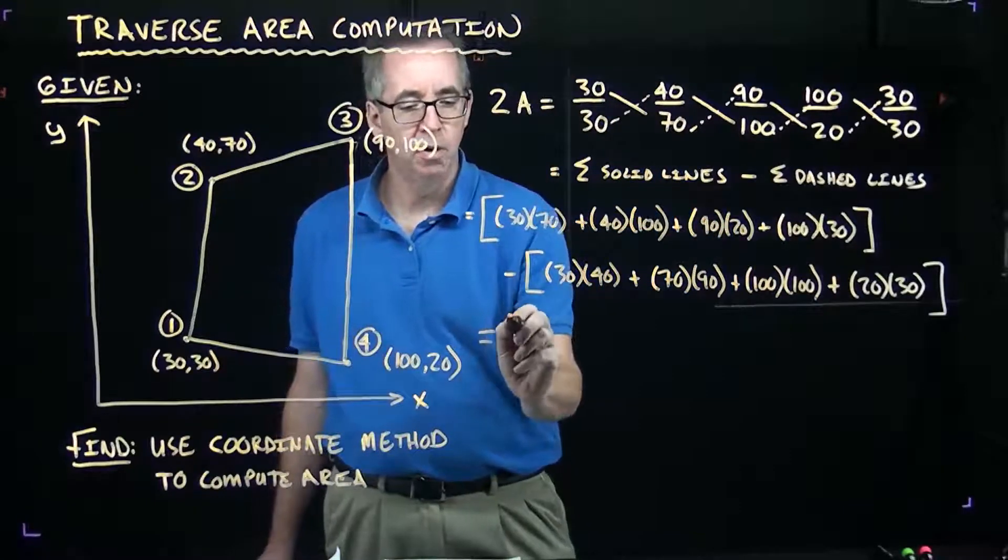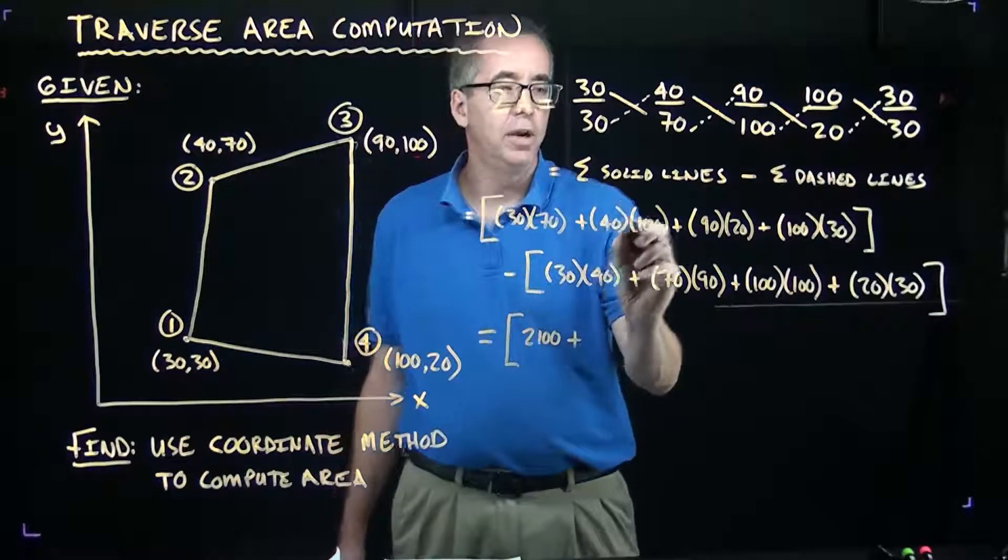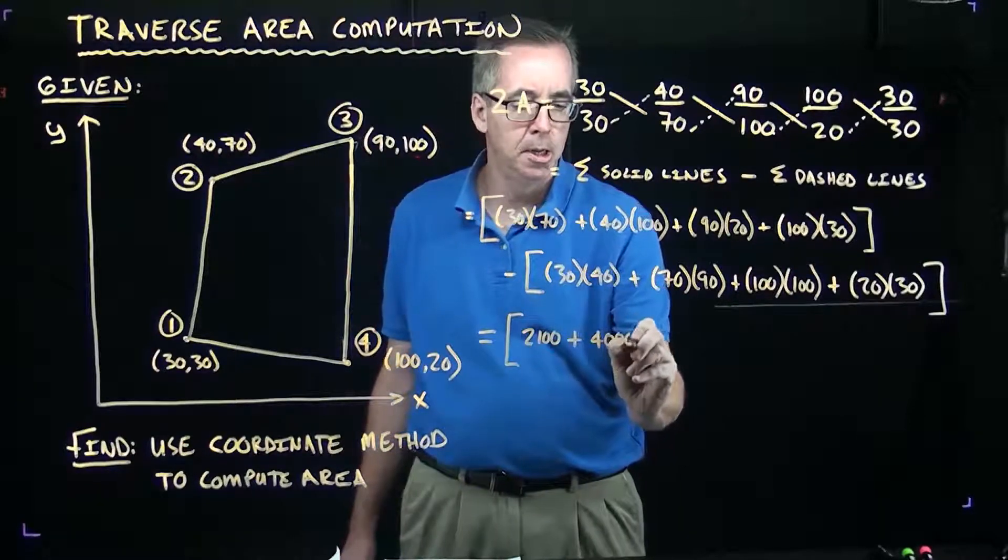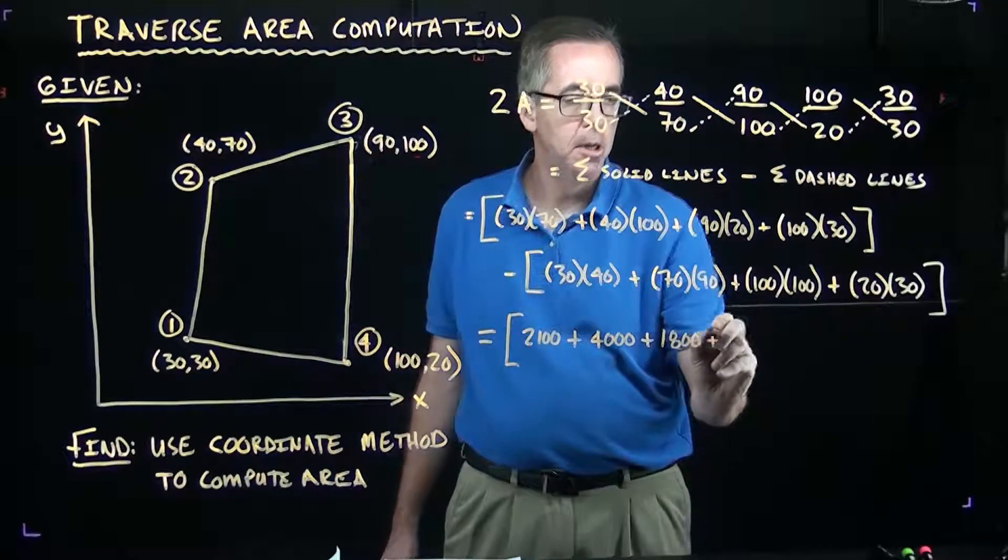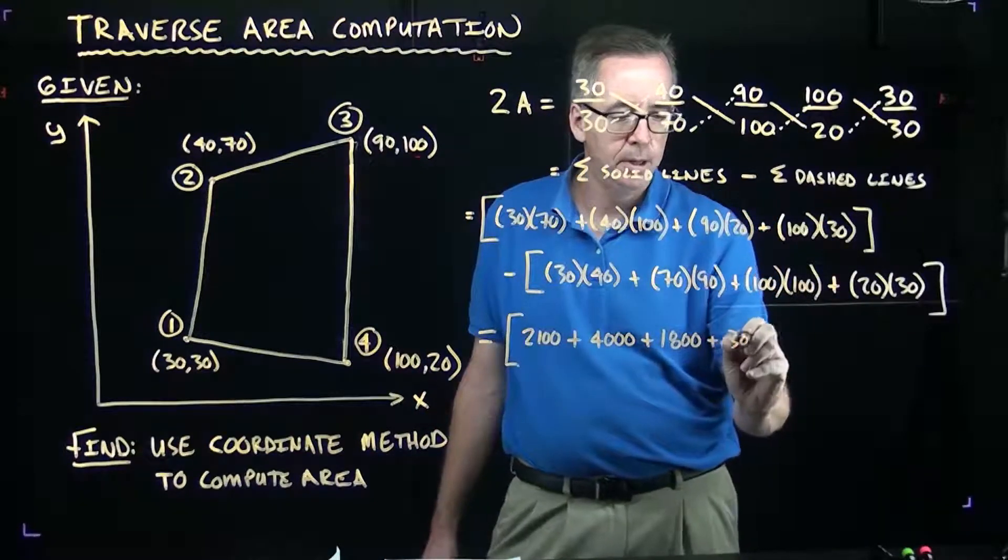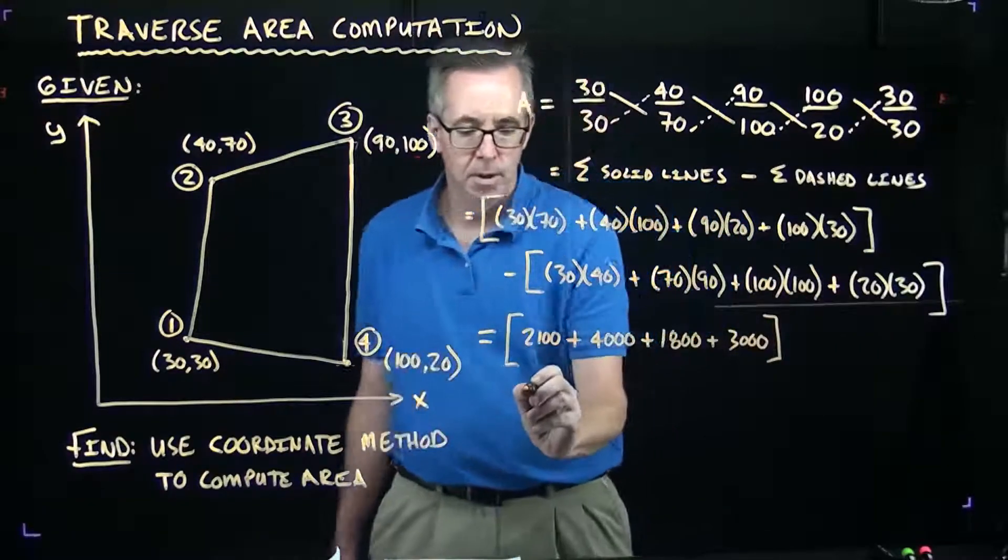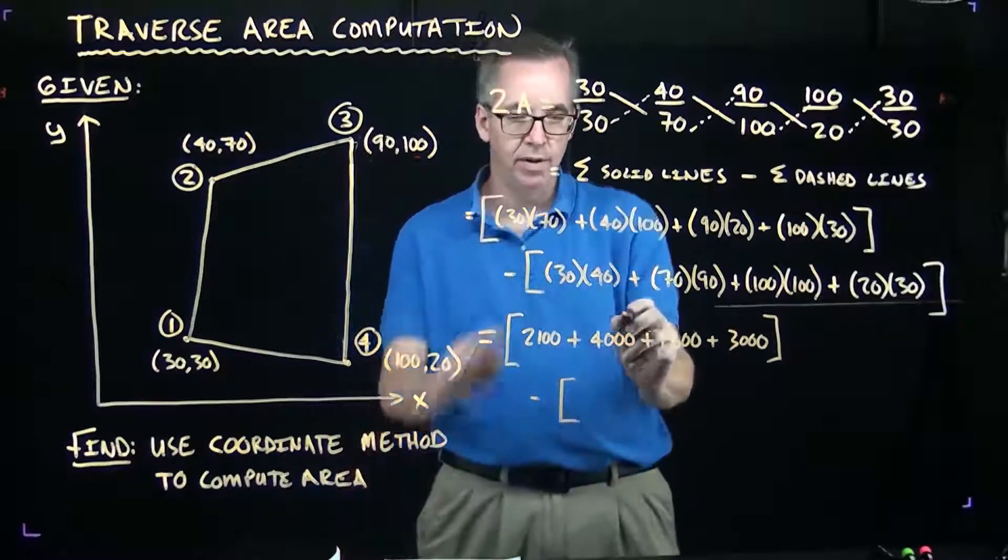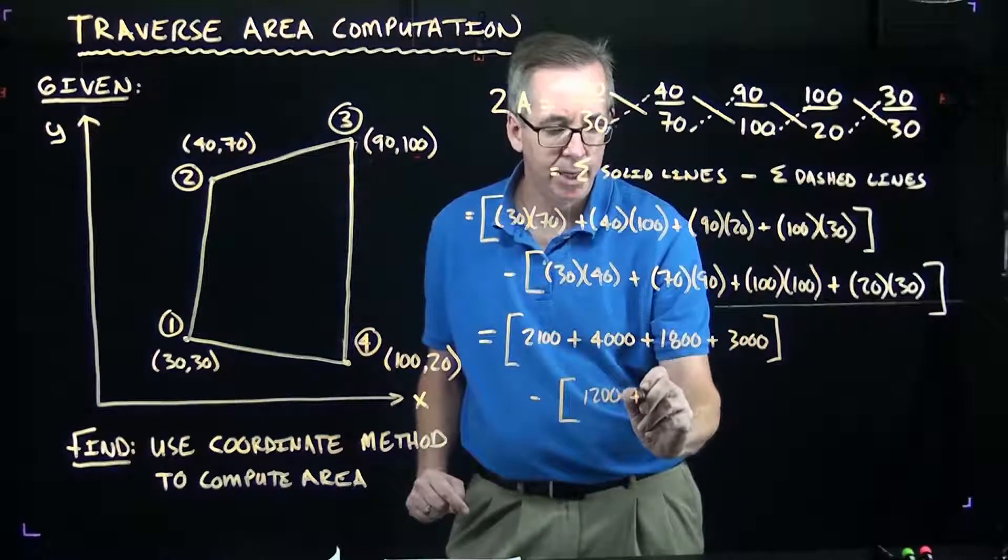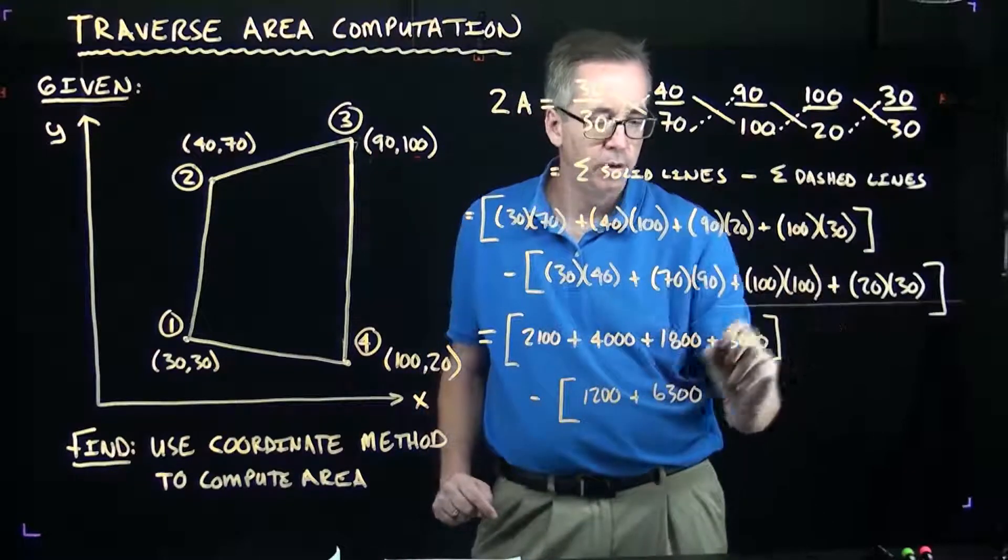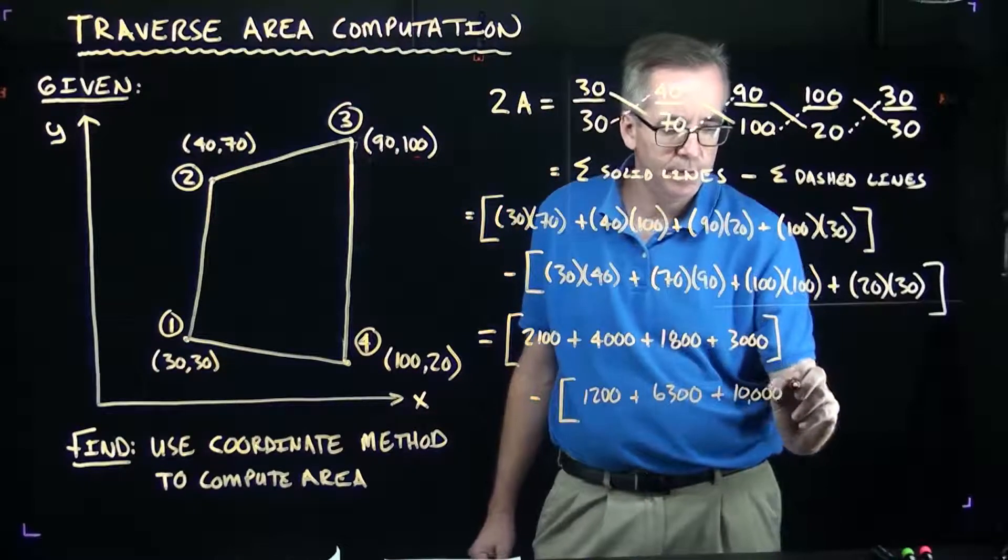Then it's just number crunching. If I set this up, I've got 30 times 70 is 2100. 40 times 400 is 4000. 90 times 20 is 1800. 100 times 30 is 3000. That's the sum of the solid lines. And we're going to subtract out the dashed lines. The dashed lines are 30 times 40 is 1200, 70 times 90 is 6300, 100 times 100 is 10,000. And then 20 times 60 is 600.